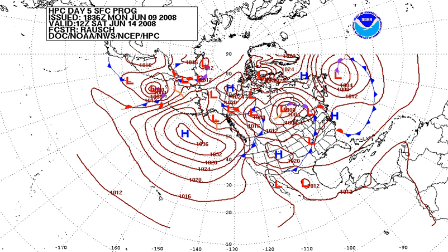However, in Canada's public weather reports, sea level pressure is instead reported in kilopascals. In U.S. weather code remarks, three digits are all that are transmitted; decimal points and the one or two most significant digits are omitted. For example, 1013.2 mb is transmitted as 132, 1000.0 mb is transmitted as 000, and 998.7 mb is transmitted as 987.